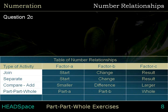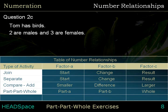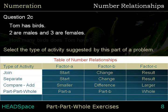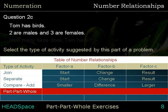Here is a partial problem: Tom has 5 birds. 2 are males and 3 are females. Table of Number Relationships — select the type of activity suggested by this part of a problem. The answer is: Part Part Whole. In a Part Part Whole problem, Part A and Part B make the whole.